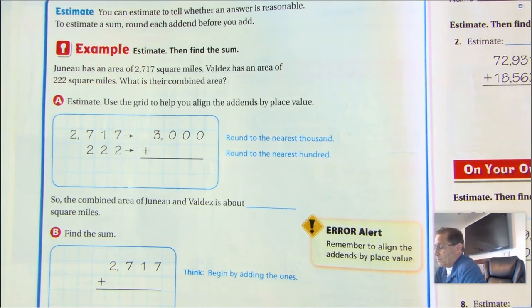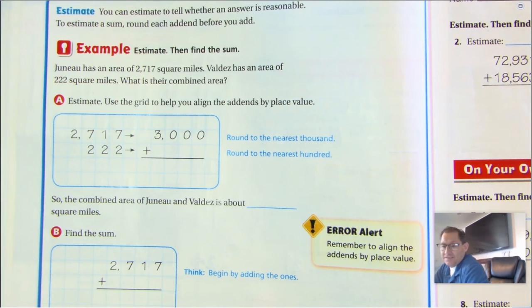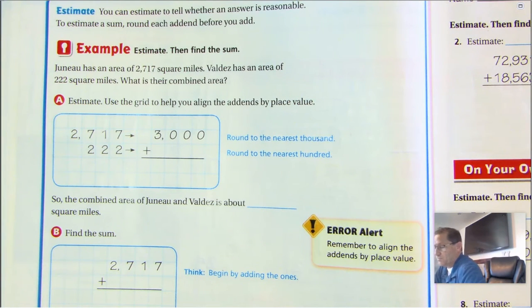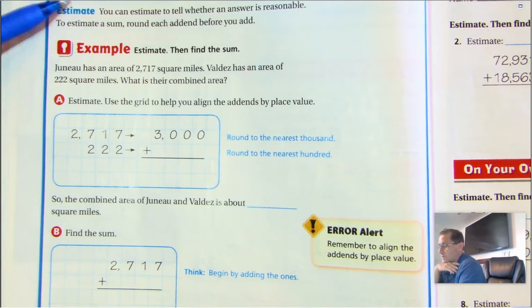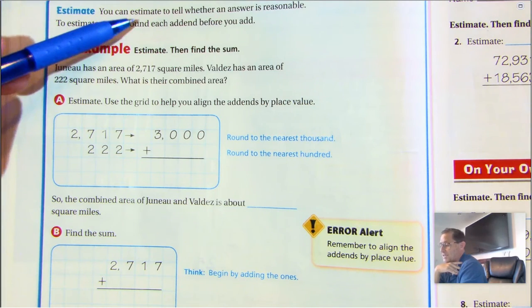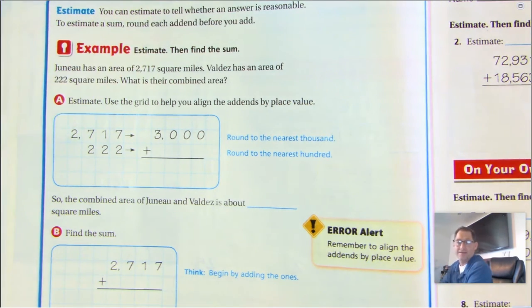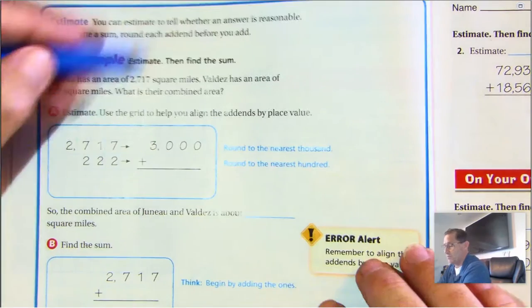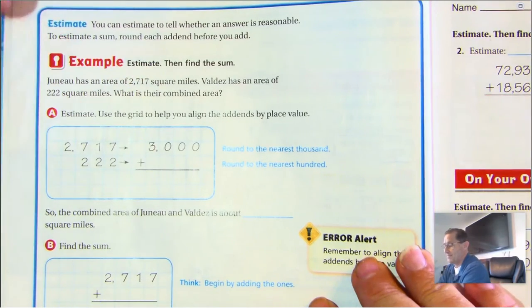On page 28, you can estimate to tell whether an answer is reasonable. The reason we'd want to do that is just to verify that our answer is in the right neighborhood — sometimes we add and our answer is way off. To estimate a sum, we're going to round each addend before you add. Here the example wants us to estimate and then find the sum.